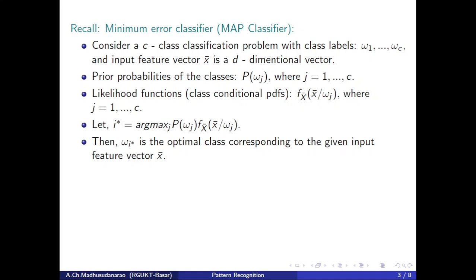This is the MAP classifier — Maximum A Posteriori Probability classifier. The posterior probability is proportional to the prior times the likelihood. Whichever class gives the maximum value for the posterior probability, that class is selected as the output class for the given input x̄.